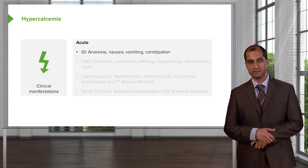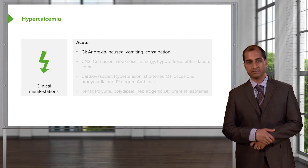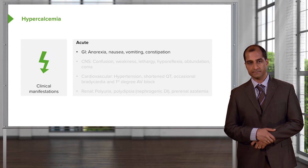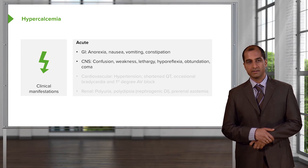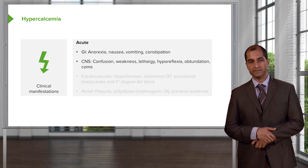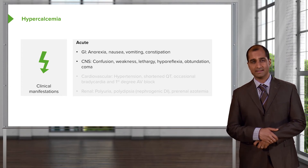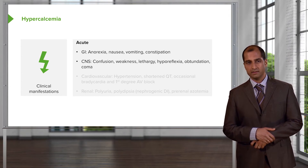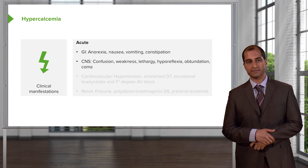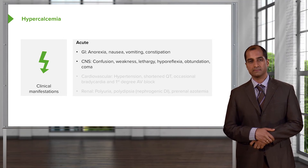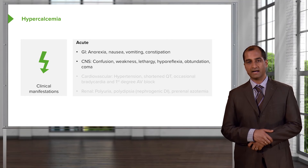In hypercalcemia, acute issues the patient may have include anorexia, nausea, vomiting, and constipation. For the CNS, there will be confusion and weakness. Importantly, there is hyporeflexia rather than tetany — there is no muscle twitching in hypercalcemia. If anything, you see hyporeflexia.